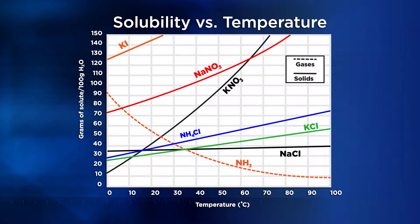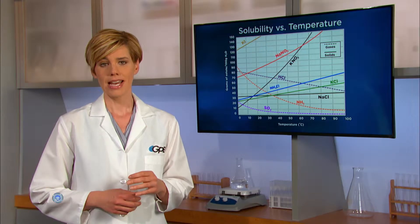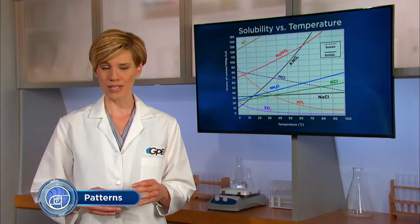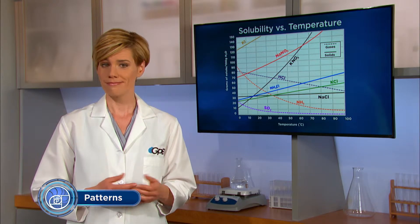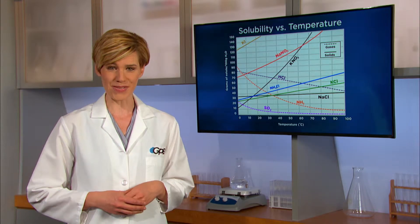Gases such as ammonia (NH3), sulfur dioxide (SO2), and hydrogen chloride (HCl) will also dissolve in water. For gases, indicated with dashed lines, the greater the temperature, the less soluble they are. This pattern is the opposite of what we see with solids, and that's why most people like their soft drinks to be cold — they're more bubbly that way.